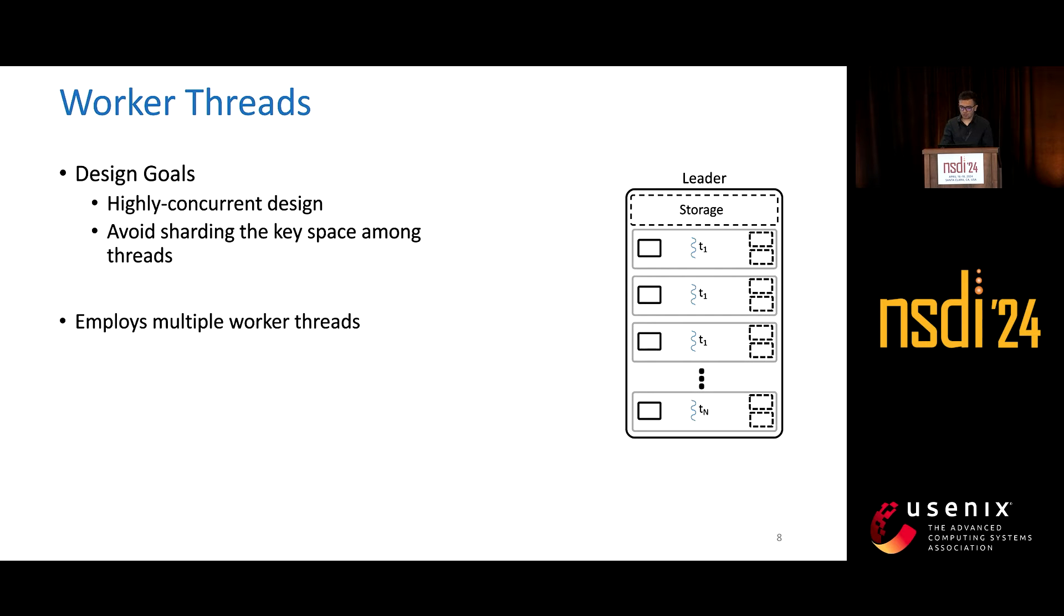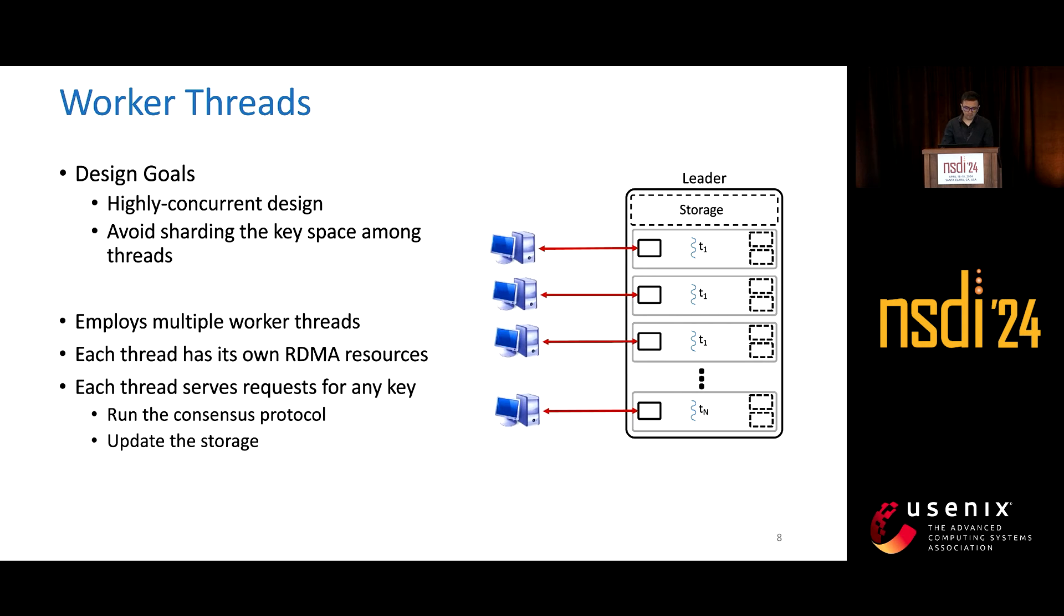LOLKV employs multiple worker threads, each of which come with their own RDMA resources, including queue pairs. Any thread can serve requests for any key, unlike current systems, which are sharded.